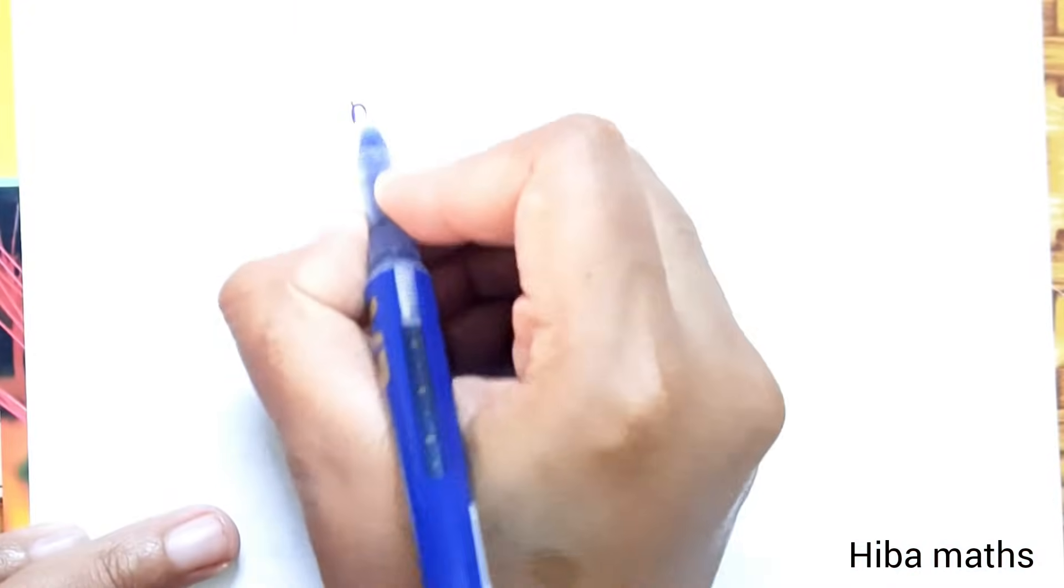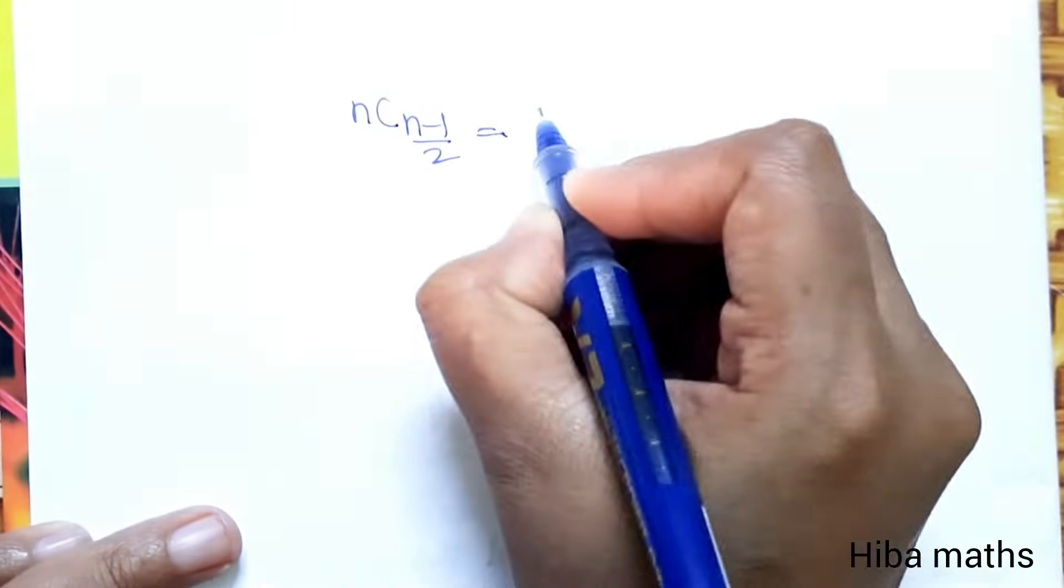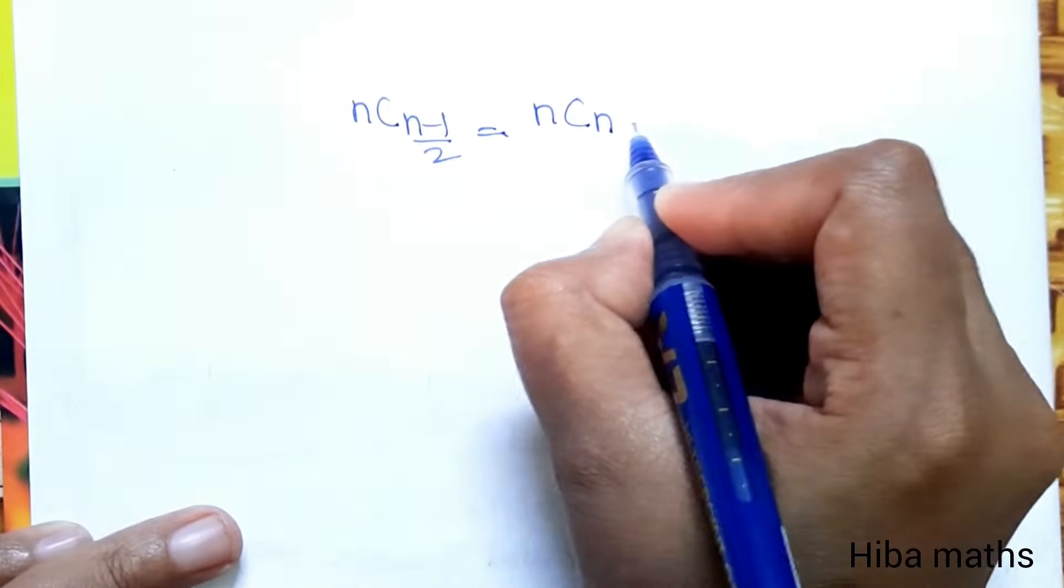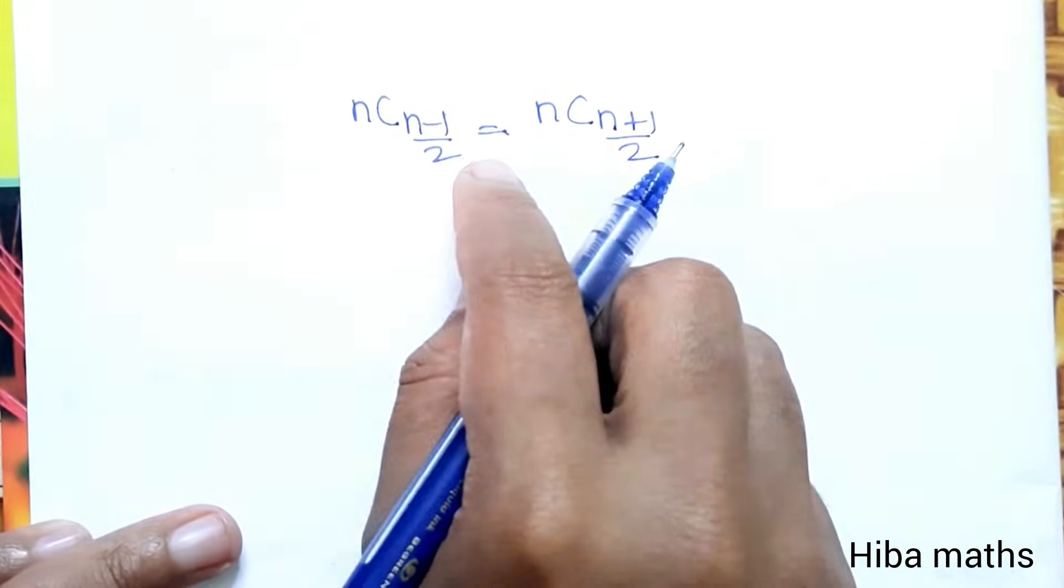Next line: nC((n-1)/2) = nC((n+1)/2). We get these two are equal.